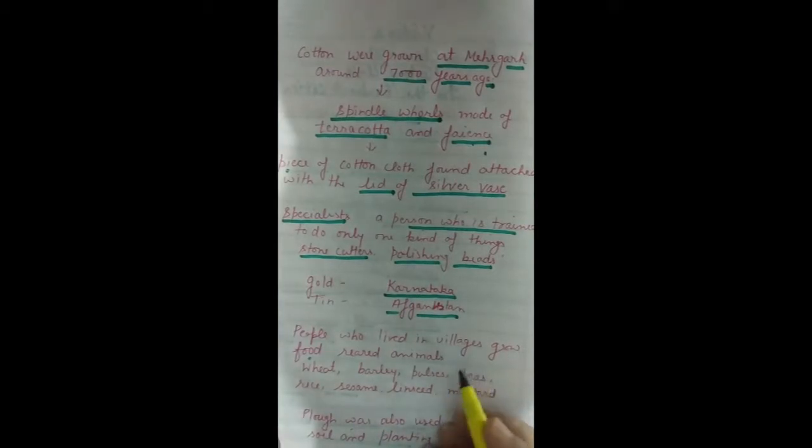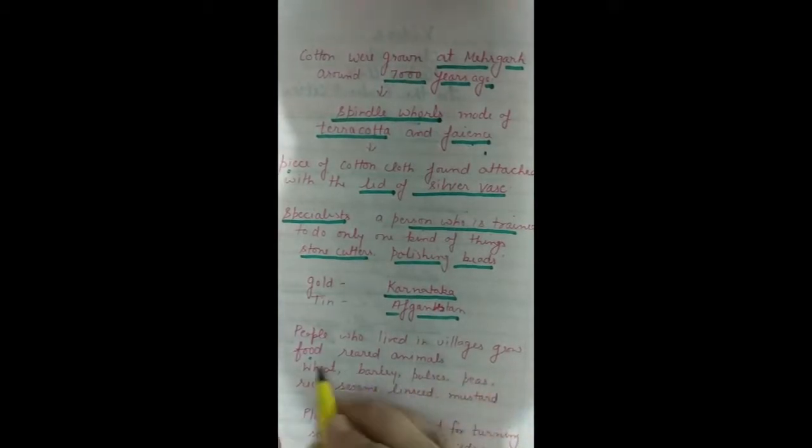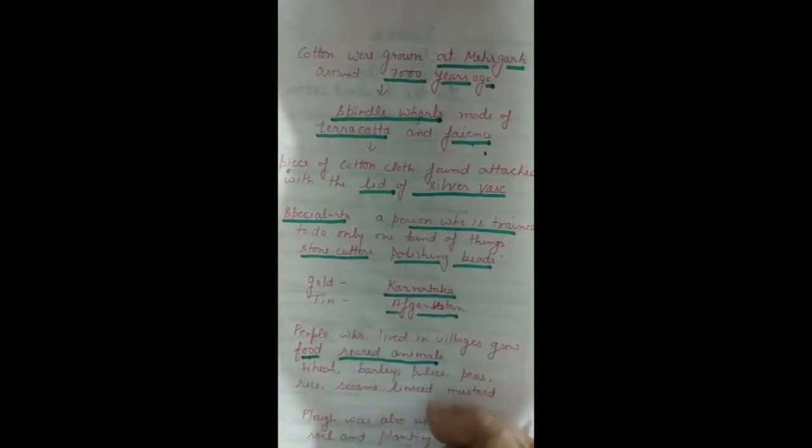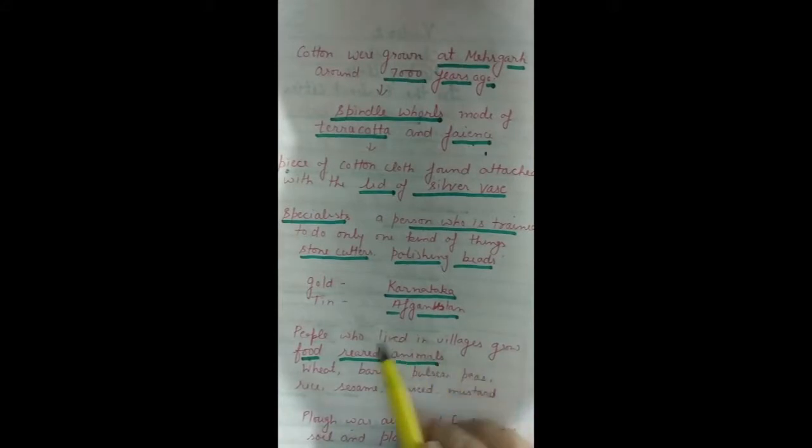People who lived in villages grew food and reared animals. People who lived in cities would depend on the people of villages for their food and milk products, because the people who lived in villages reared animals and grew food.